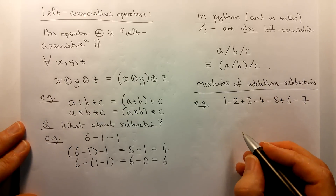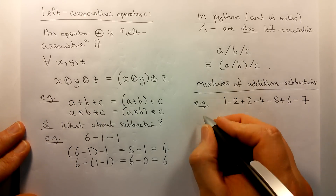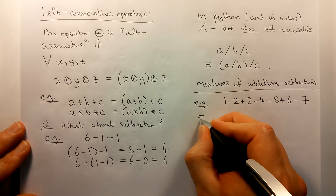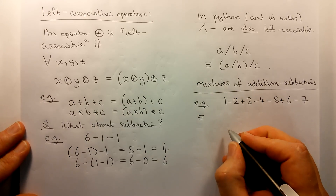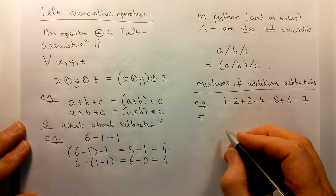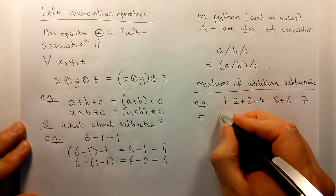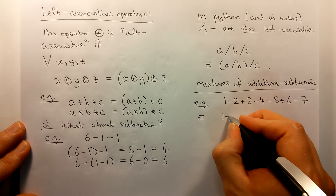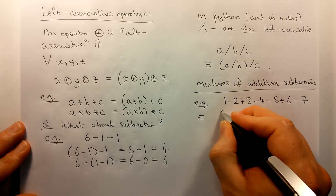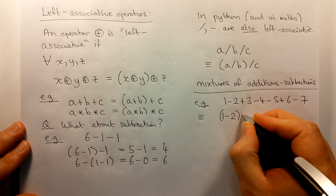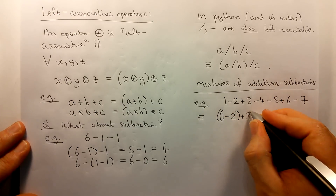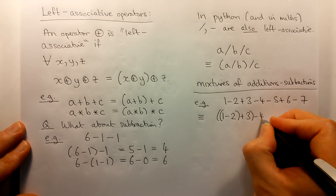If I introduce some extra brackets into that expression to make it clear what's meant, that's equivalent to simply performing all of the operations left to right.